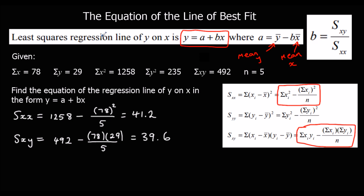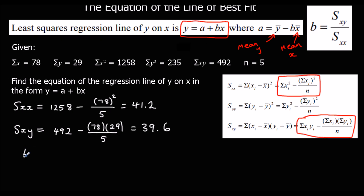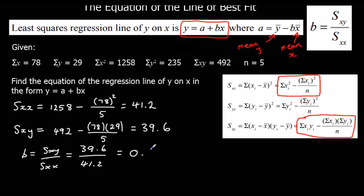So now we can work out b. b is Sxy over Sxx, so that's 39.6 over 41.2, which gives us — to 3 significant figures — 0.961. I'm also going to store that in the calculator because we're going to use it again. As a fraction that's 99 over 103, which is probably easier, but either way keep it for working out a.